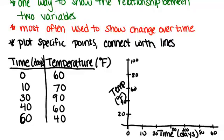Now I'm going to plot the points that I was given. So at zero days the temperature was 60, so my first point will be right here. At 10 days the temperature was 70, so I'm going to find 70. At 30 days the temperature was 90 and I plot that point. 40 days the temperature was 60, and 60 days the temperature was 40.